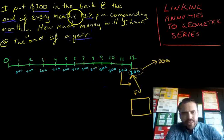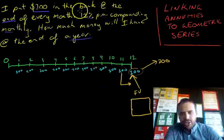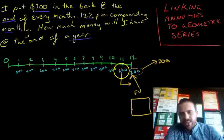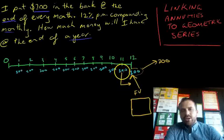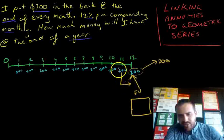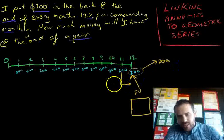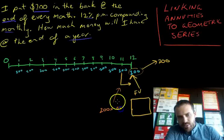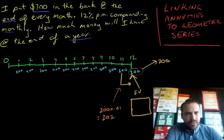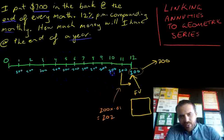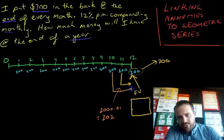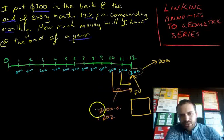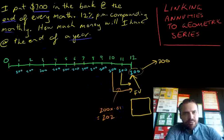Now this two hundred dollars travels from month eleven to the end, so it travels through one month and you get one month's worth of interest. Our interest is 12 percent per annum compounding monthly — I chose 12 because it makes it simple, meaning in one month 200 grows by one percent. So the future value of that 200 is going to be 200 times 1.01, which is going to be 202.